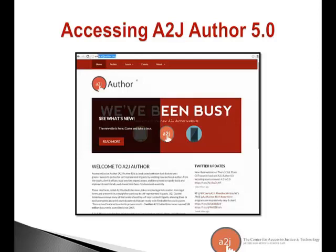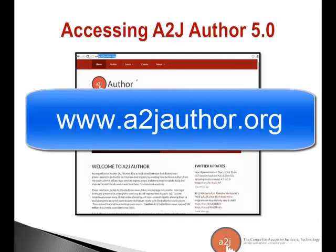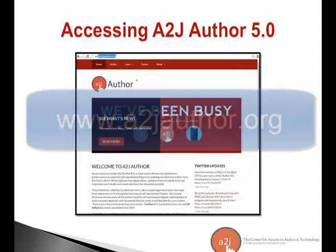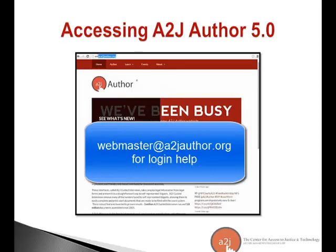How do you get to A to J Author? A to J Author 5 is completely web-based — you author on our website. There's nothing to download and it can run in any modern browser. You go to atojauthor.org. We recently updated our website around the beginning of the year, so it may look different, but your accounts are still the same if you had access within the last year. If you don't have access or you forget your password, you can email me or webmaster at atojauthor.org and we can sort out any login issues.